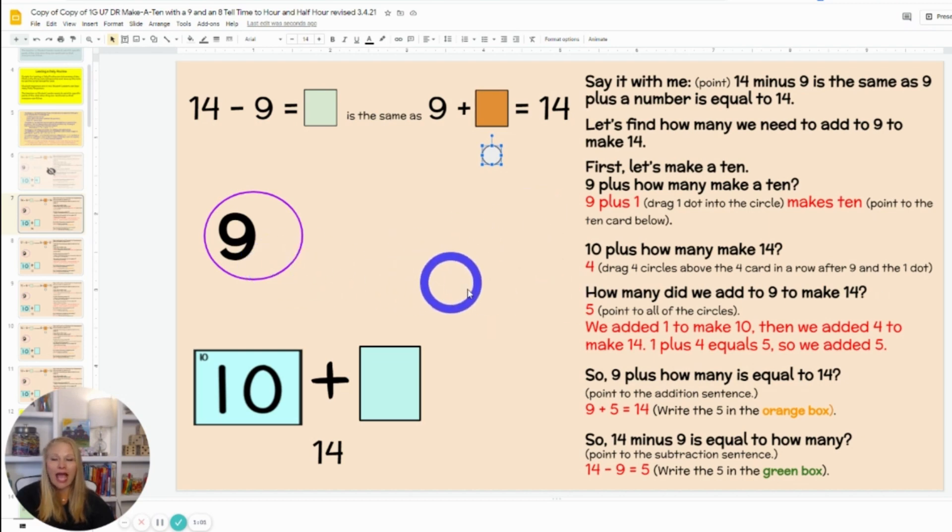So we're going to go ahead and add on now. I would say 9 and how many more make a 10? Let's count up from 9 to 14. 9 and 1 make a 10. If I'm already at a 10, how many more do I need to get to 14? Let's think about it. 10 and what goes with 10 to make 14? Class, 4, you're right. 10 and 4 make 14.